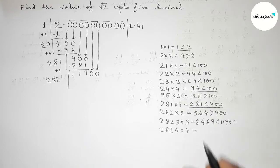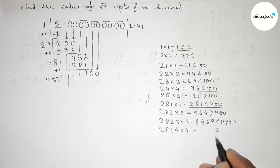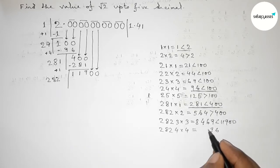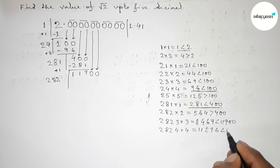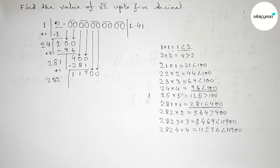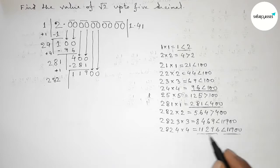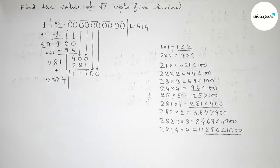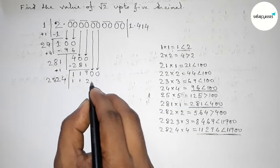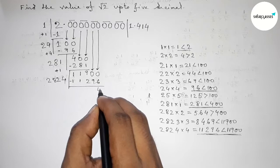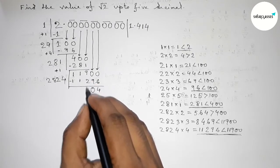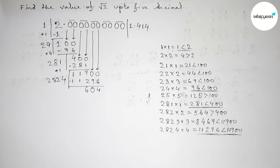2824×4=11296, which is less than 11900. We check that 2825×5 would exceed 11900, so we take 4. Write 4; 2824×4=11296. Now subtract: 11900−11296=604.